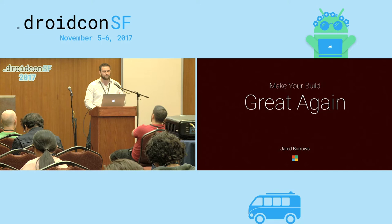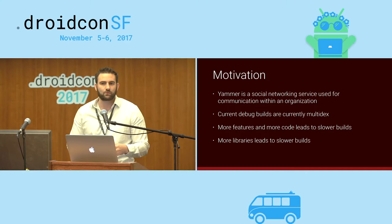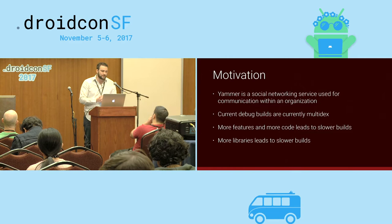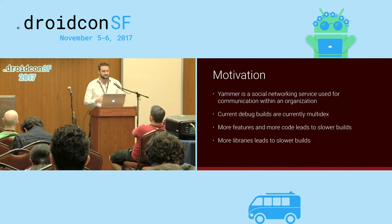The main motivation for this is our Yammer app. Yammer is a social networking service used for communication within an organization. Currently our development builds are multi-dex, but our release builds are single-dex. We were able to give customers a smaller APK size with single-dex, but how do we make our local dev builds and CI builds faster so we can iterate faster?